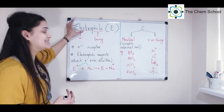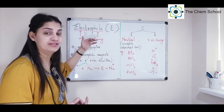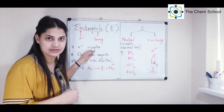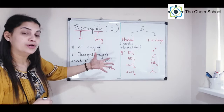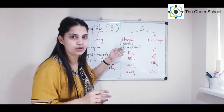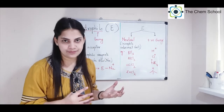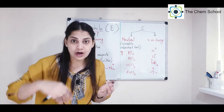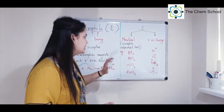Now let's talk about electrophiles. Electro means electron and phile means loving, so electrophiles are electron-loving species. Since they need more electrons, they are electron acceptors — they are electron deficient. Electrophiles also come in two types: neutral electrophiles and positively charged electrophiles. Neutral electrophiles are generally species with an incomplete outermost shell — incomplete octet for elements up to atomic number 20.